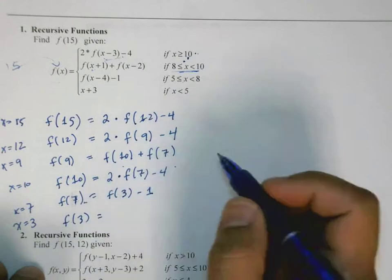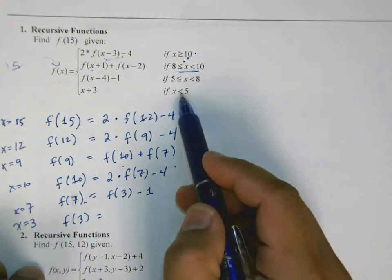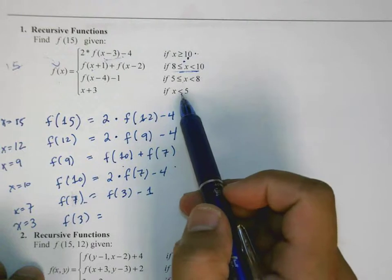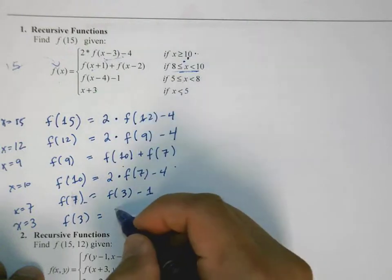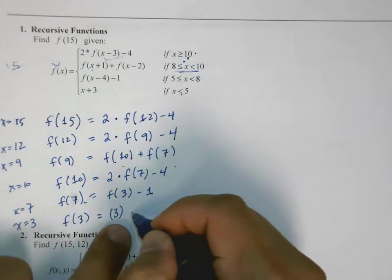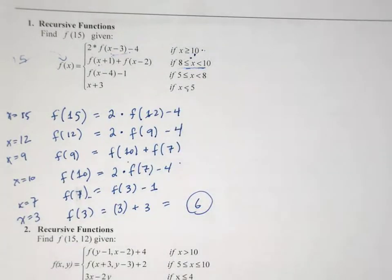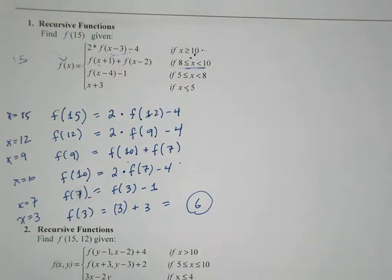So if x is equal to 3, then it's in this line of code, or this condition. So it's just 3, that's x right here, plus 3, which is equal to 6. Okay. And now once I get to this point, I can go back and substitute.